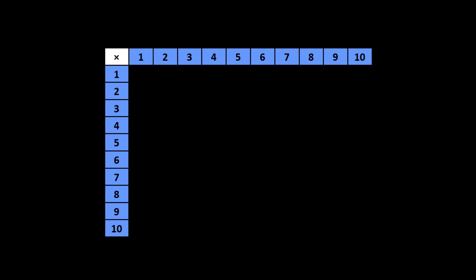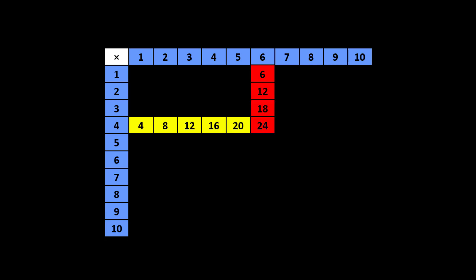You'll see that 24 is the 6th multiple of 4: 1, 2, 3, 4, 5, 6. And 24 is the 4th multiple of 6: 1, 2, 3, 4.